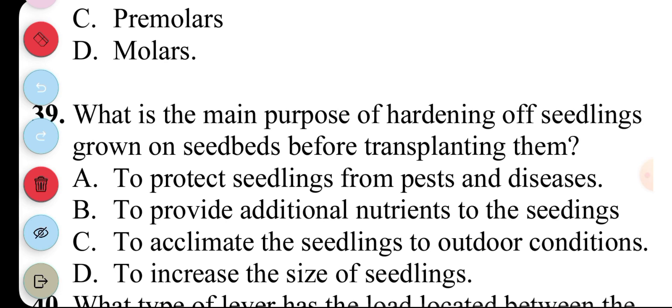Question 39. What is the main purpose of hardening of seedlings grown on beds before transplanting them? A. To protect seedlings from pests and diseases, B. To provide additional nutrients to the seedlings, C. To acclimate the seedlings to outdoor conditions, D. To increase the size of seedlings. The answer to question 39 is C, to make the seedlings used to outdoor conditions.